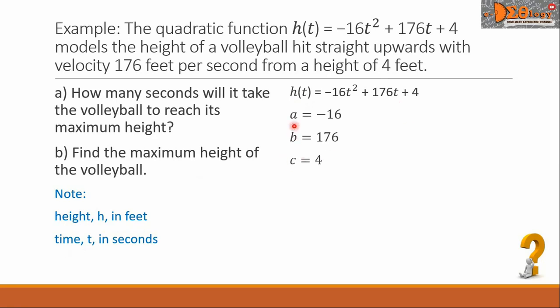It means our a is the coefficient of the t² which is -16. The b is the coefficient of t and that is 176. c is the constant which is 4.